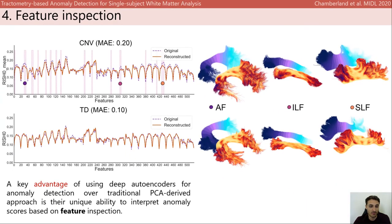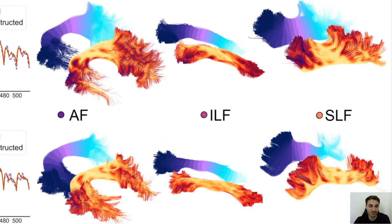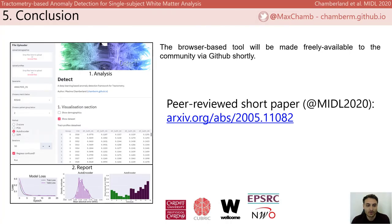Those were assessed using a permutation approach. The difference between the two can then be further interpreted in the context of tissue microstructure. To conclude, our tractometry-based anomaly detection framework is a first step towards personalized approaches by transitioning away from the traditional group-based comparison of patients against controls. If you want to know more about the technique, please make sure to check out our short paper.